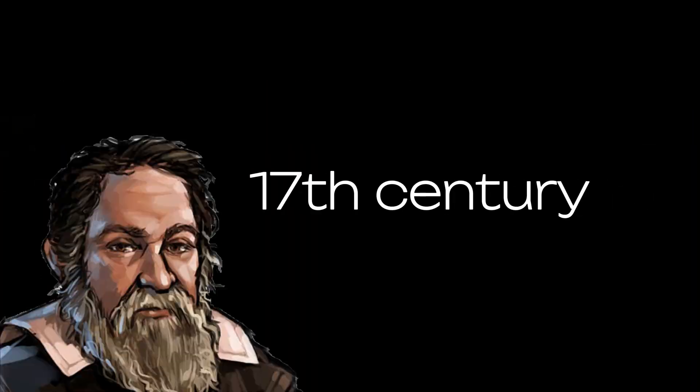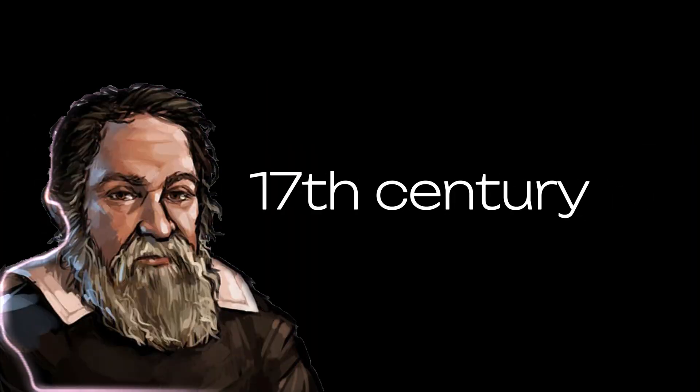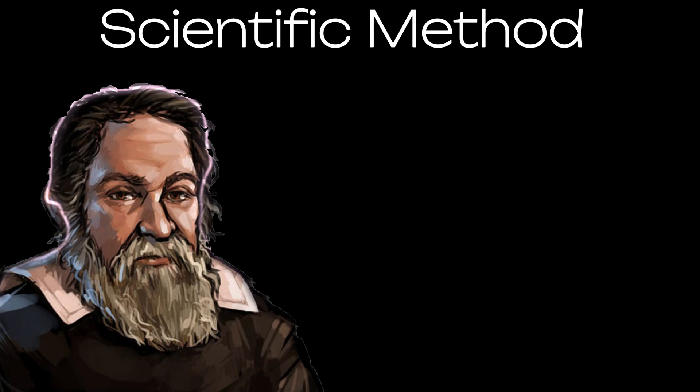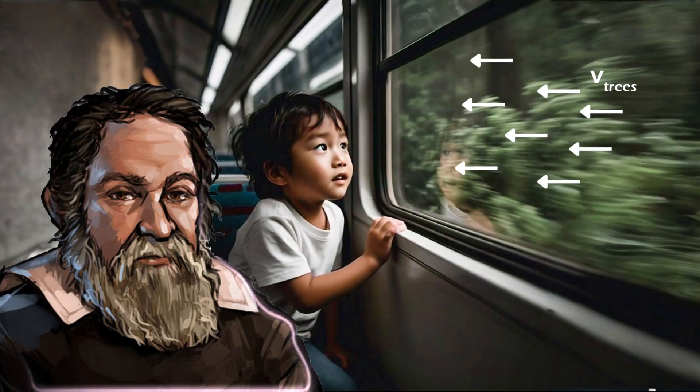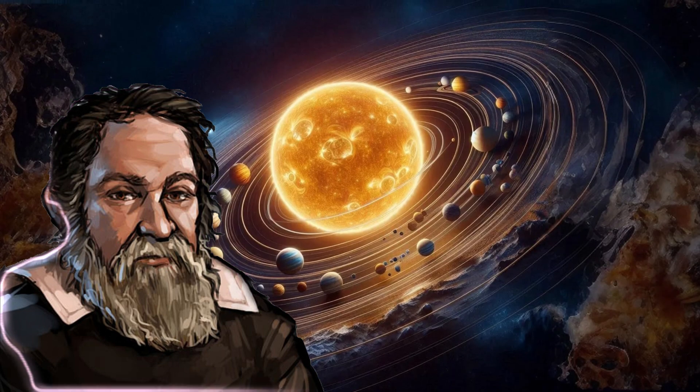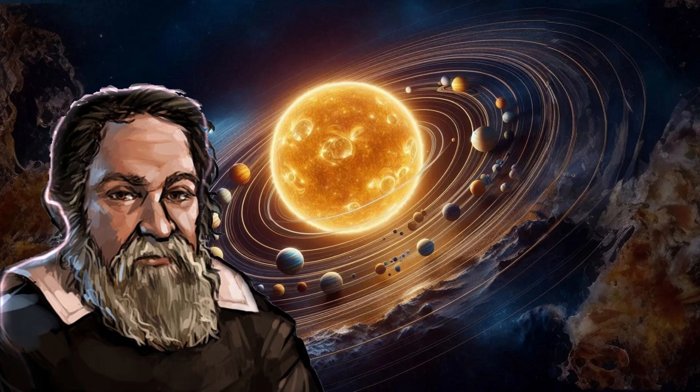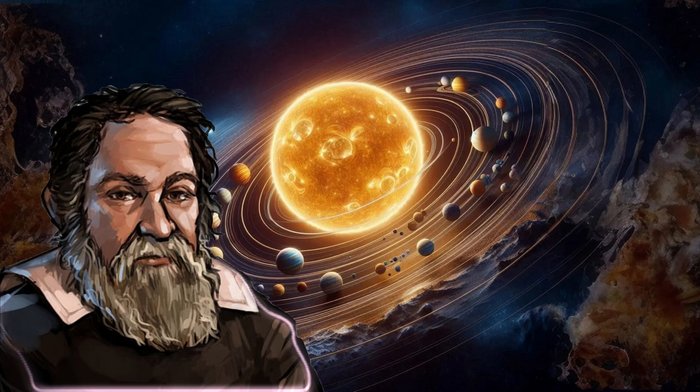However, in the 17th century, Galileo Galilei changed this by introducing the scientific method. Galileo's approach focused on observing and experimenting. From establishing the concept of inertia and relativity to confirming the heliocentric model of the solar system by Copernicus, his ideas challenged the old beliefs and set the stage for modern science.